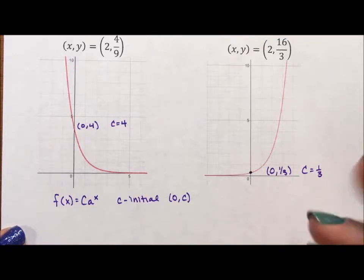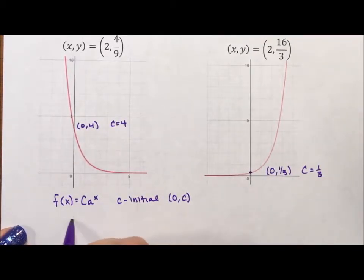Okay, so what I'm going to do to figure this out is I'm going to say, for this one, f(x) = 4a^x. And I'm going to use the point (2, 4/9). And I'm going to put 4/9 in for my y value and I'm going to put 2 in for my x value.